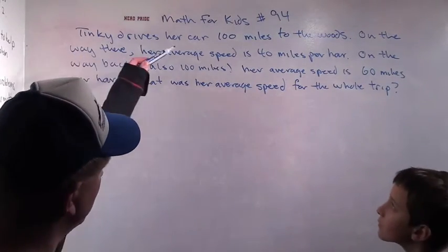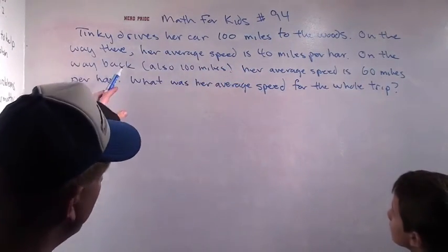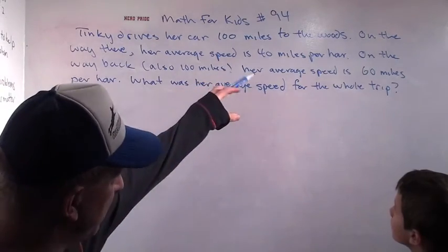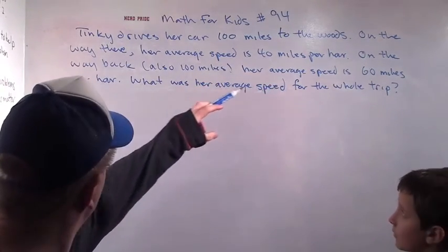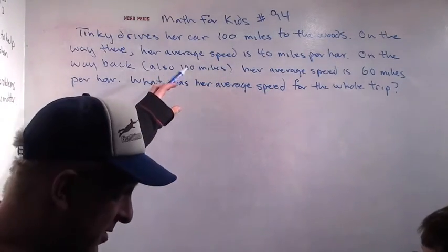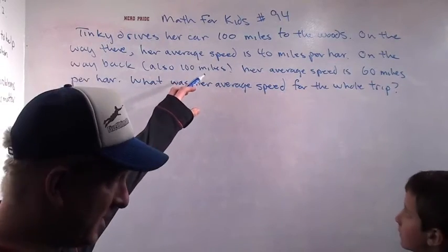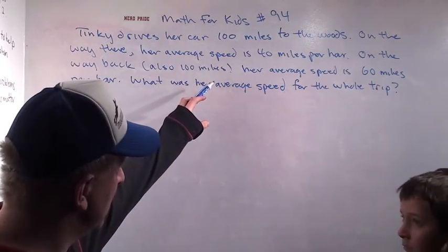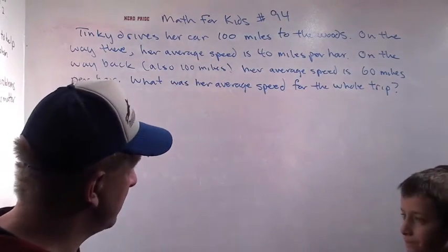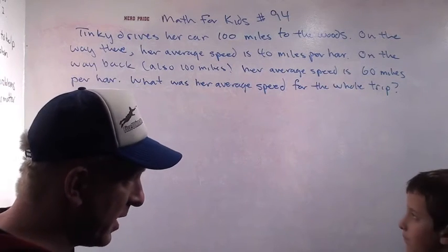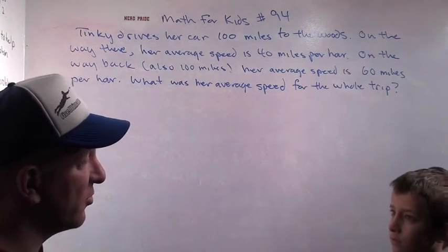Tinky drives her car 100 miles to the woods. On the way there, her average speed is 40 miles per hour. On the way back, which is also 100 miles, which goes exactly the same way she came, her average speed is 60 miles per hour. What is her average speed for the whole trip?